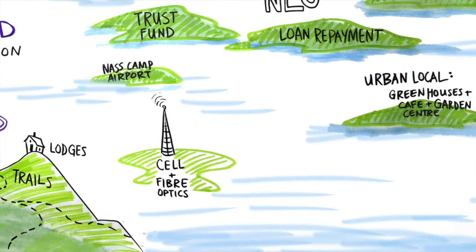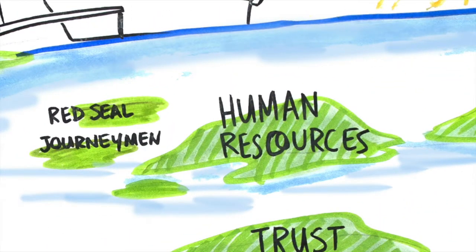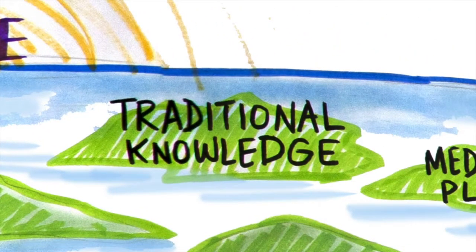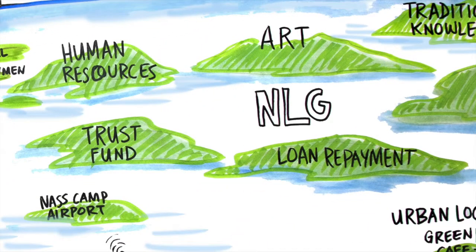Human resources identified included red-tailed journeymen, traditional knowledge, and marriage licensing. Financial resources included the Nisqlat settlement trust — though it is important to note that these funds are restricted based on investment priorities — the Nisqlat economic development fund, and the treaty loan repayment.